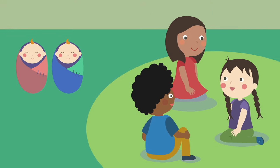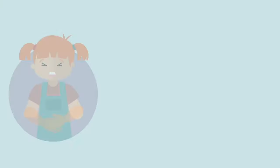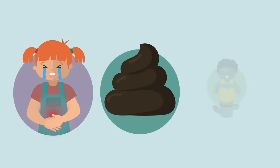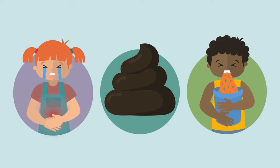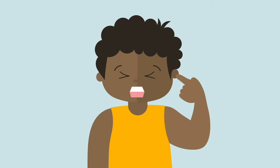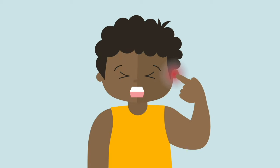Especially in infants and young children, the symptoms might not present that clearly. They can show gastroenteric symptoms like stomach cramps, diarrhea, and vomiting instead. And if they haven't yet acquired language, they are often seen touching the affected ear to signal their discomfort.